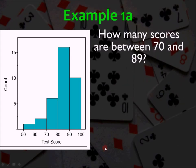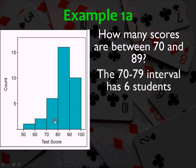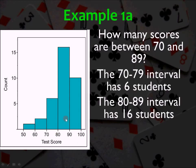So in example 1A, how many students scored between a 70 and an 89? Well, we can see that there are six students that got between 70 and 79, and 16 students between 80 and 89. So there were a total of 22 students that scored between a 70 and an 89.